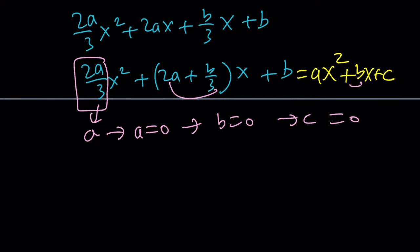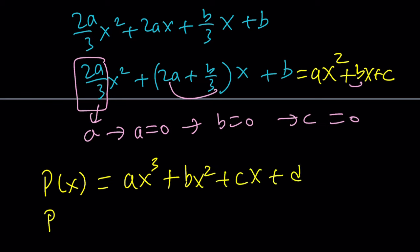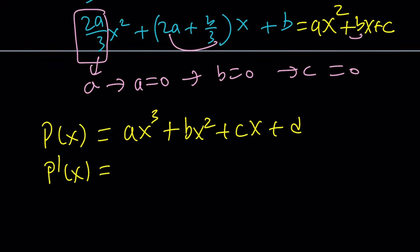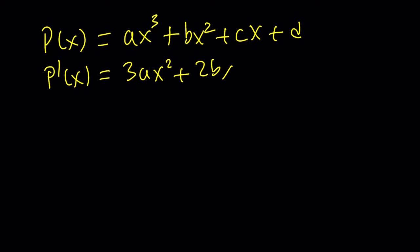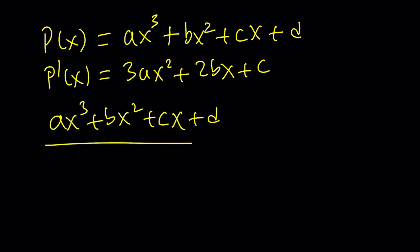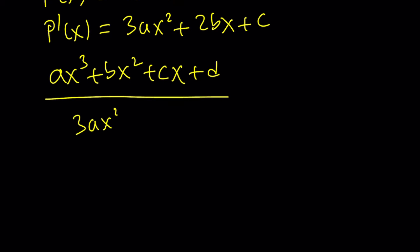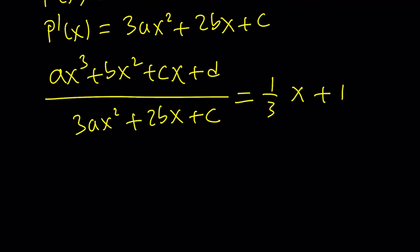Can P be cubic? Let's test it out. If P can be written as AX cubed plus BX squared plus CX plus D, its derivative is 3AX squared plus 2BX plus C. We want to divide the polynomial by its derivative and get 1 over 3X plus 1. The reason 1 over 3 is a clue is that when you multiply 3 and 1 third you get 1, which will give us matching cubic terms.